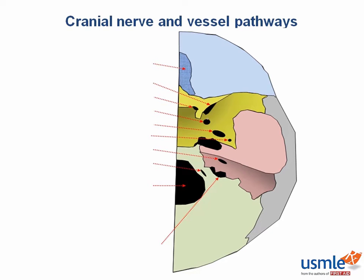There are many holes in the skull called fossa or foramina that the cranial nerves and other structures pass through to exit the skull. We're going to go through these from anterior to posterior. Most anterior is the cribriform plate. This isn't a single opening but rather a meshwork of many tiny holes that cranial nerve 1 passes through. Cranial nerve 1 is for the sensation of smell, so it lies above the nasal cavity in the ethmoid bone.